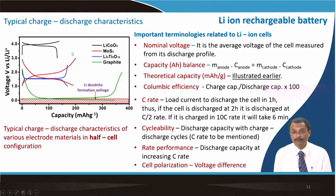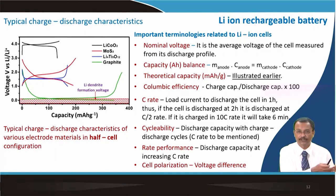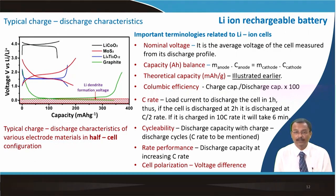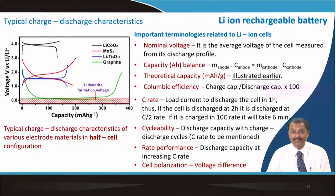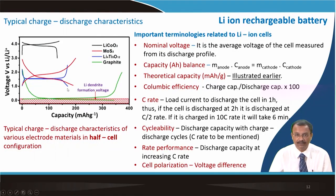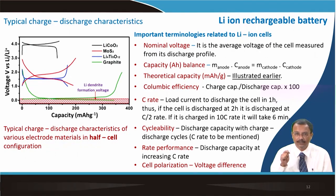Coulombic efficiency is given by the ratio of charge capacity to discharge capacity, multiplied by 100. It tells us whether the lithium rocking between the two electrodes is lost somewhere or if the amount leaving one electrode exactly returns. The C rate is defined as the load current to discharge the cell in one hour — discharging at 2 hours is C/2 rate, and charging at 10C means the cell is charged in only 6 minutes. Cyclability is the discharge capacity plotted against cycle number, and the C rate used must be stated.